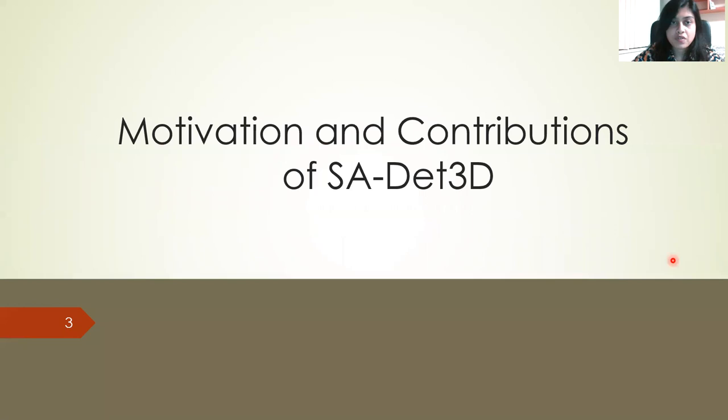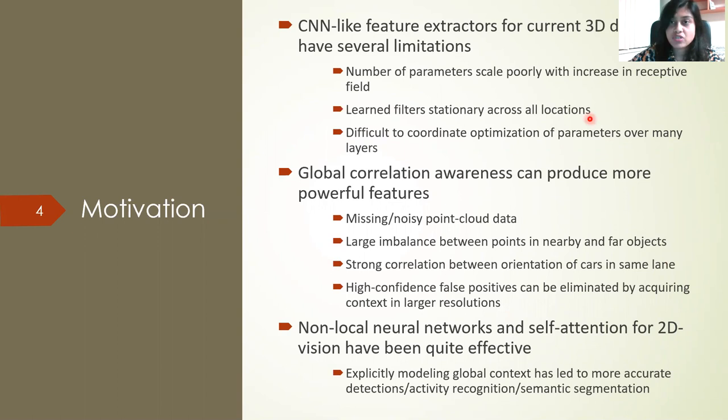This is the outline of our talk today. To motivate the problem, we noticed that CNN-like feature extractors for current 3D object detectors have several limitations, including the fact that the number of parameters scales very poorly with increase in receptive field size, and that learned filters are stationary across all locations. We also noticed that global correlation awareness can produce more powerful features, which can help if there is missing or noisy point cloud data, or if there is a large imbalance in points between nearby and far objects.